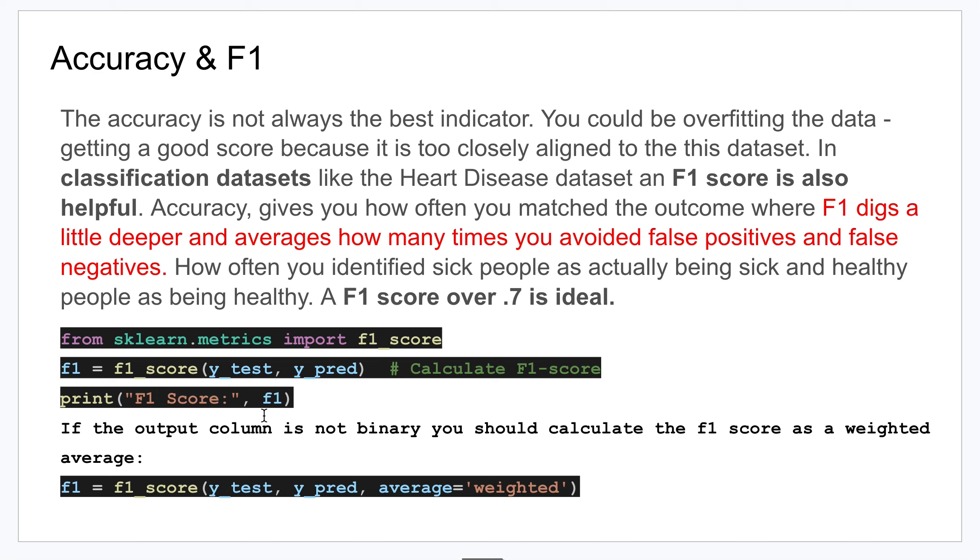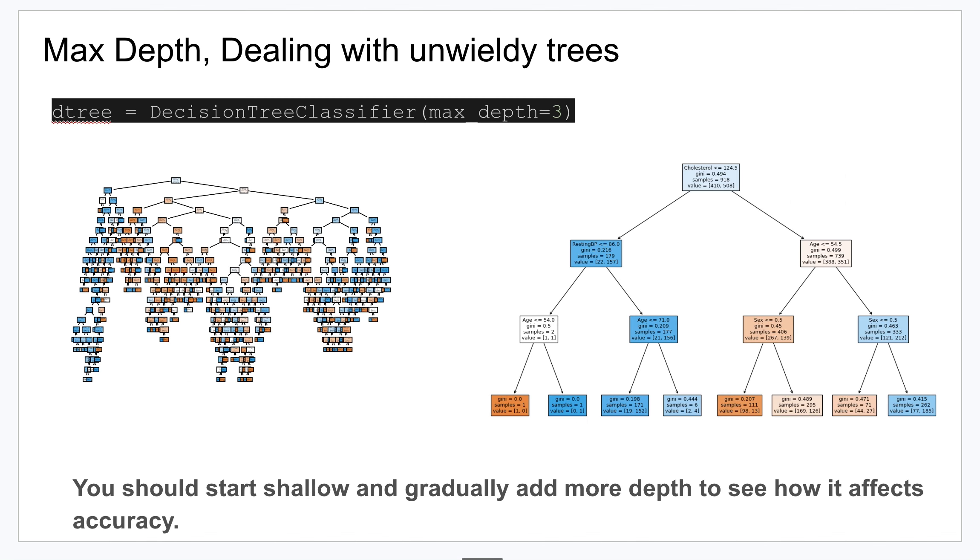The F1 digs a little deeper than what the accuracy does and looks to see how many times you avoided false positives and false negatives. Again you're looking for that to be 0.7 or above to make sure that your tree is a good decision tree.